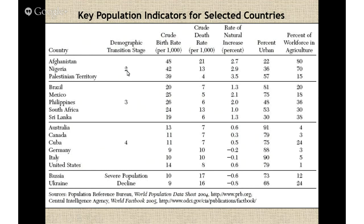Moving to stage three, you have Brazil, Mexico, Philippines, South Africa, and Sri Lanka as examples. Birth rates are declining compared to stage two but are still relatively high, and death rates have dropped as people begin moving into major cities. Mexico City, for example, is a multi-million population city that attracts a large workforce. The rate of natural increase is lower and the amount of urban living is increasing.